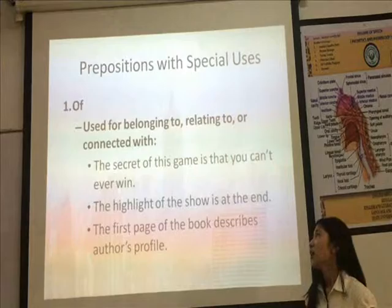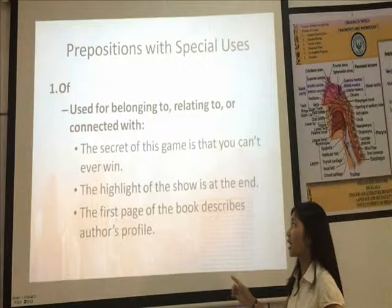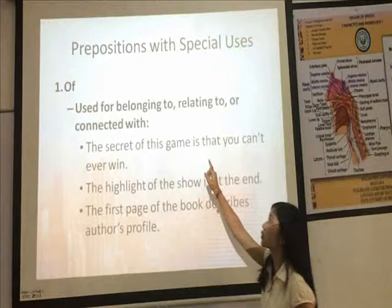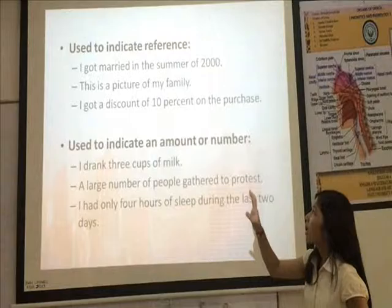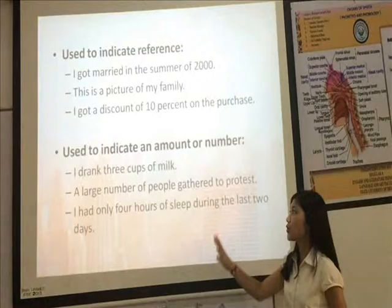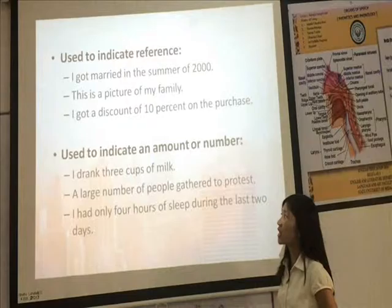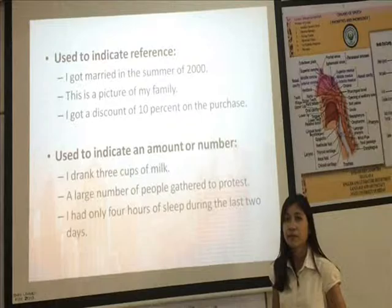Some prepositions have special uses. The first is 'of'. The use of 'of': first, it is used for belonging to, relating to, or connected with. For example: the secret of this game is that you can't ever win — 'secret' belongs to the game. Second, it is used to indicate reference: I got married in the summer of 2000 — 2000 is the reference of when they got married. Third, it is used to indicate amount or number: I drank three cups of milk — indicating the amount of milk.